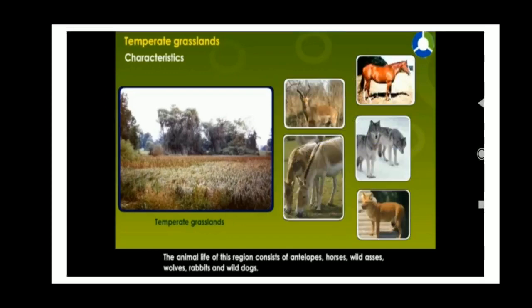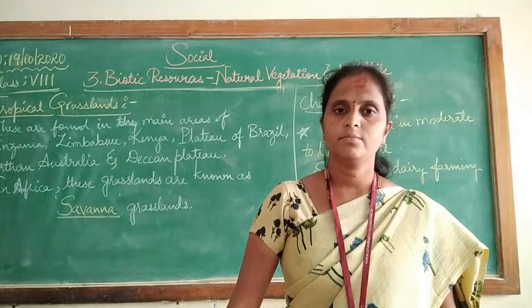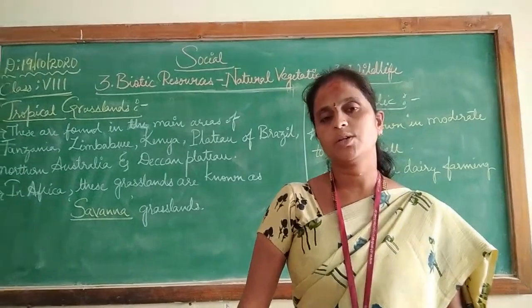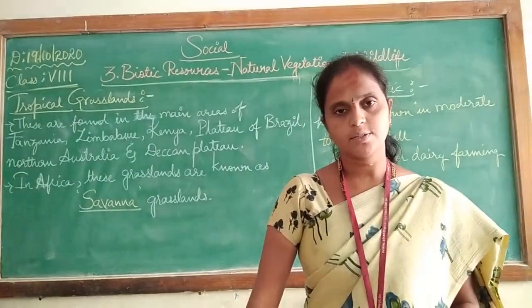Now we will learn about the wildlife of temperate grasslands. The animal life of this region consists of antelopes, horses, wild asses, bulls, rabbits and wild dogs. This concludes what we have learned about the temperate grasslands of the world.